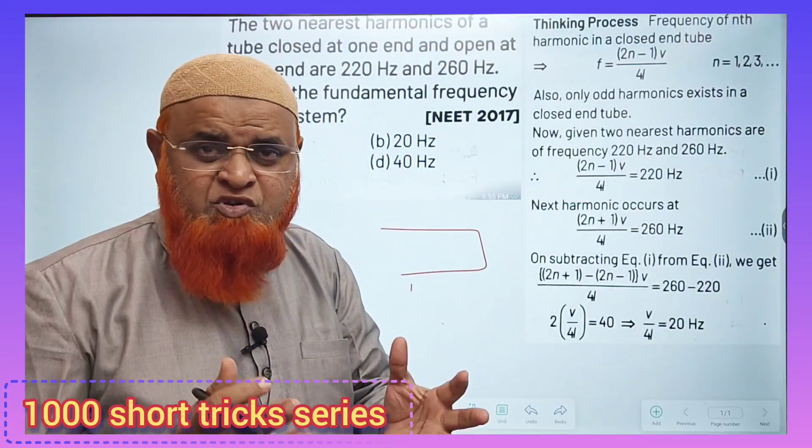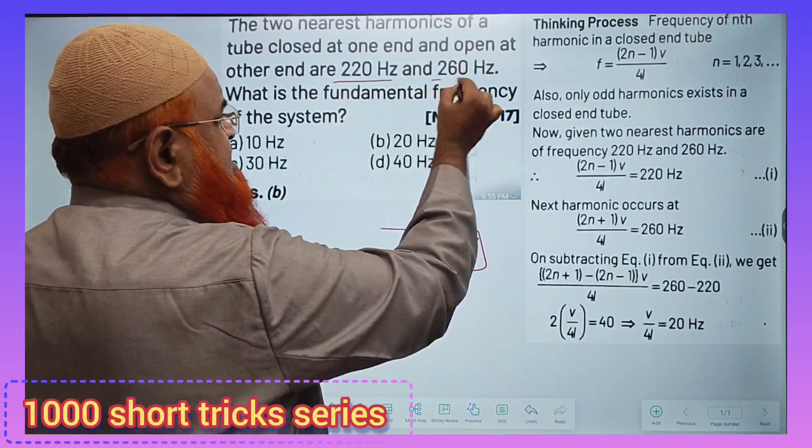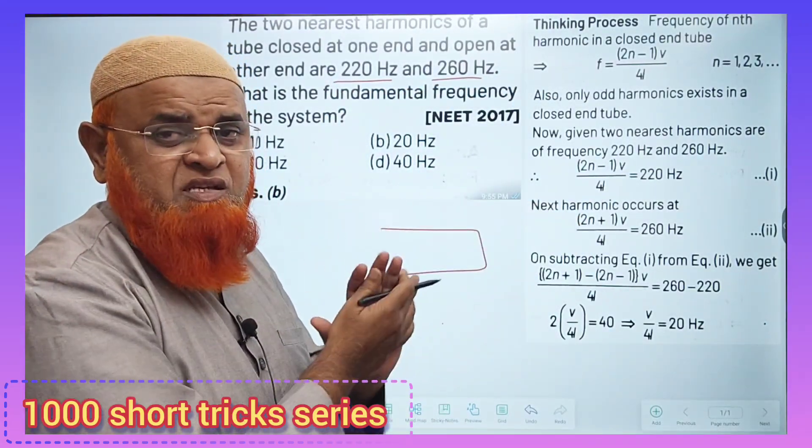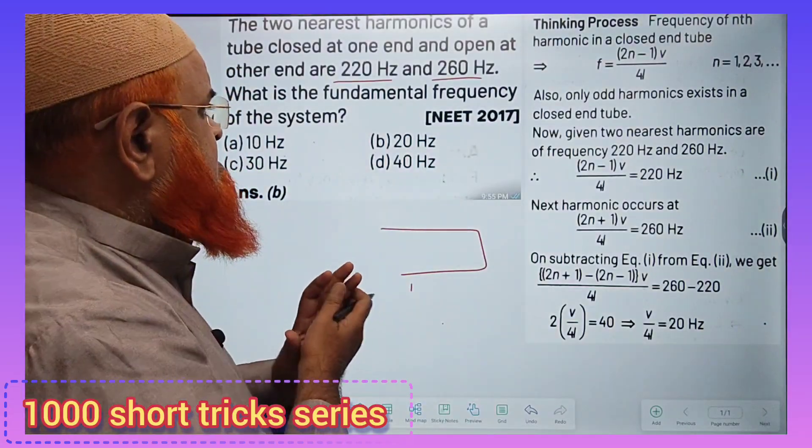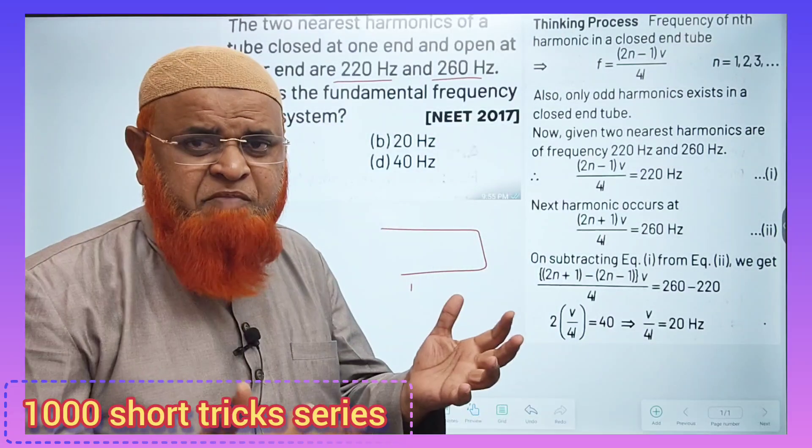The two nearest harmonics of a closed pipe - it is given as 220 and 260 Hz. These are successive harmonics. The question asks: what is the fundamental frequency of that system? It's a closed pipe.